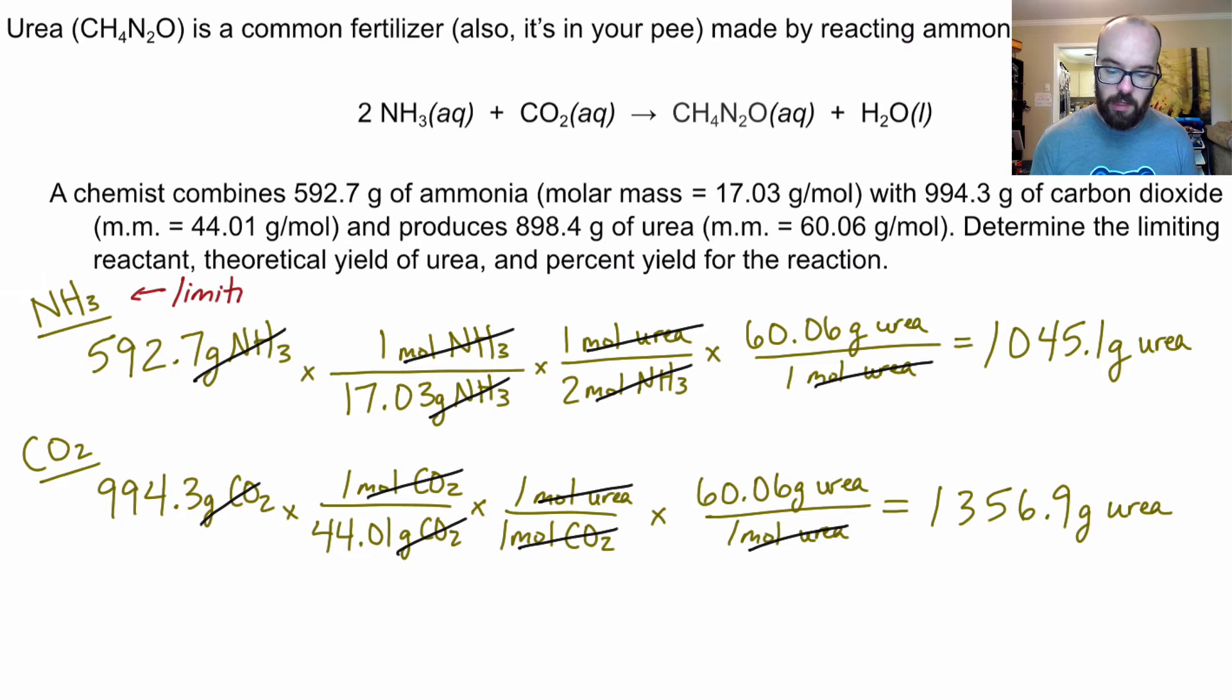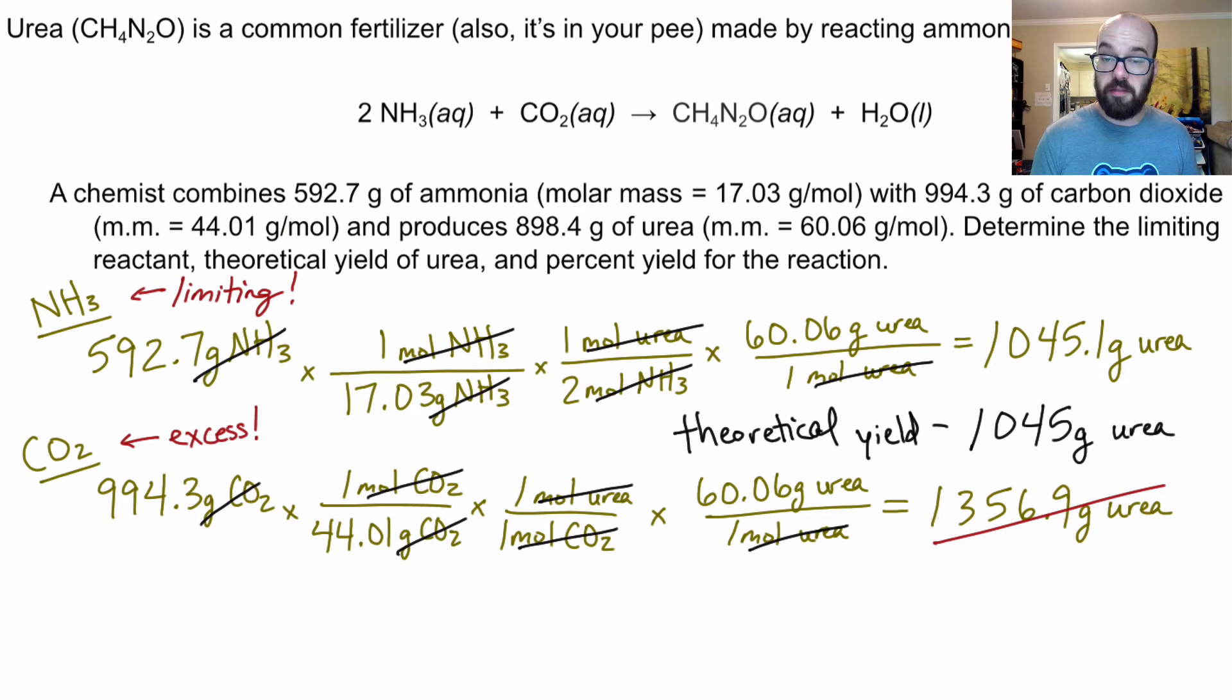Basically, whichever of these is lower, that'll tell you which is your limiting reactant. So NH₃ is our limiting reactant here. And CO₂ is our excess reactant. Sometimes the problem will just tell us that something's in excess. And then we only need to do it for the one that's limiting. But in this case, we didn't know. And so we had to figure out NH₃ is our limiting reactant, which means that we don't need that 1,356 number.